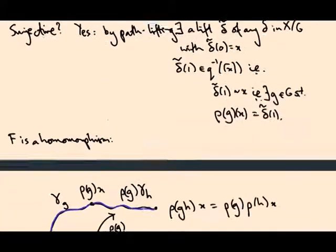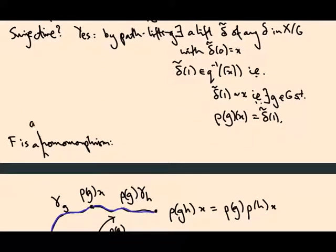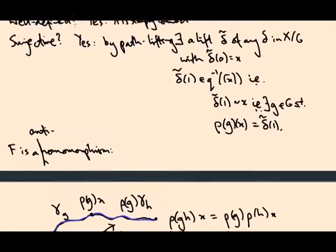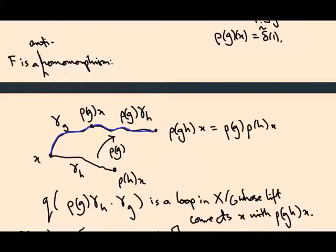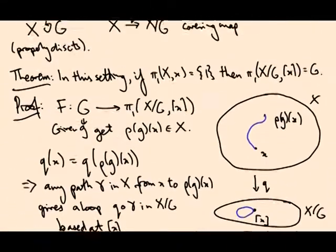So apart from this slight cheat, this is an anti-homomorphism. It's not a problem, I didn't say it to start off with. We now have a complete proof of this theorem. It means you can just read off the fundamental group from the group action that gives you the quotient.